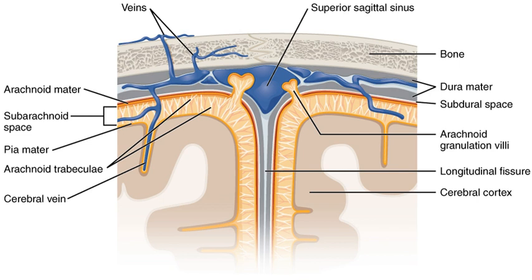The subarachnoid space is the space that normally exists between the arachnoid and the pia mater, which is filled with cerebrospinal fluid, and continues down the spinal cord. Spaces formed from openings at different points along the subarachnoid space are the subarachnoid cisterns, which are filled with cerebrospinal fluid. The dura mater is attached to the skull, whereas in the spinal cord, the dura mater is separated from the vertebrae by a space called the epidural space, which contains fat and blood vessels. The arachnoid is attached to the dura mater, while the pia mater is attached to the central nervous system tissue. When the dura mater and the arachnoid separate through injury or illness, the space between them is the subdural space. There is a subpial space underneath the pia mater that separates it from the glia limitans.